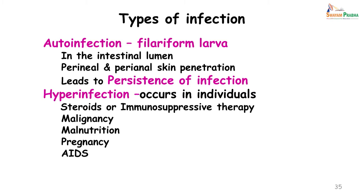In auto-infection, the filariform larva reenters through the intestinal lumen or through the perianal or perineal skin, leading to persistence of the infection. Hyper-infection occurs in individuals usually on steroids or immunosuppressive therapy due to malignancy, in malnourished patients, rarely in pregnant patients, and — as one of the main causes of immunosuppression today — in AIDS patients.